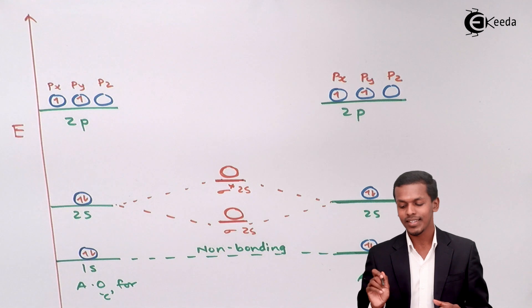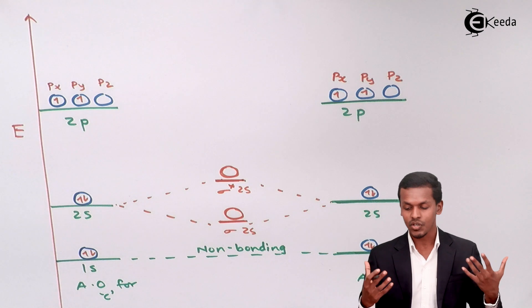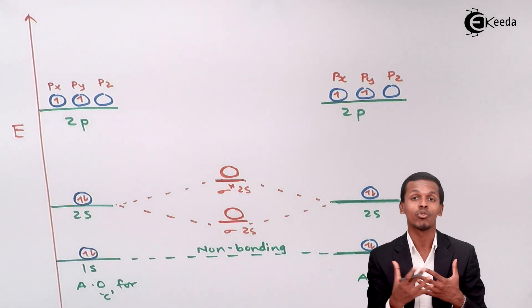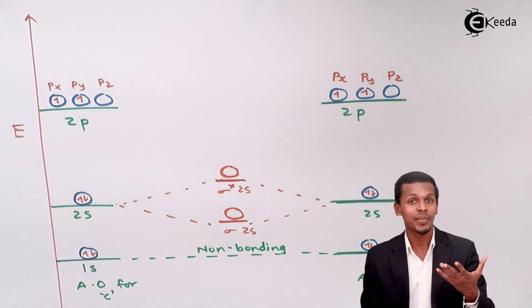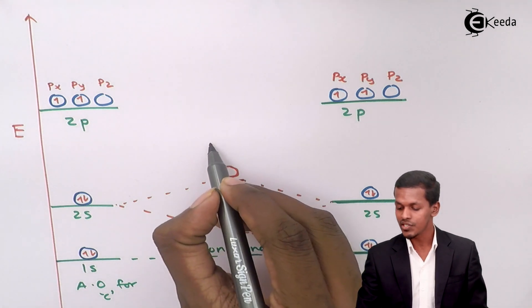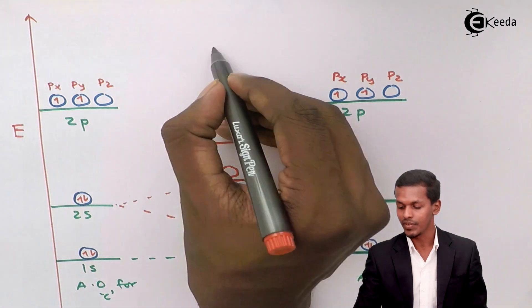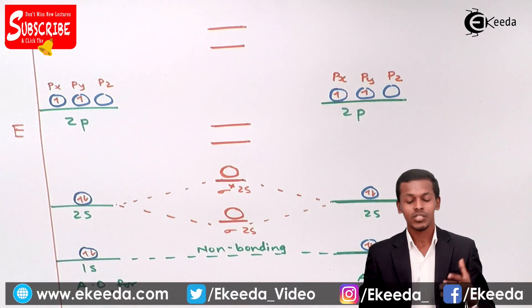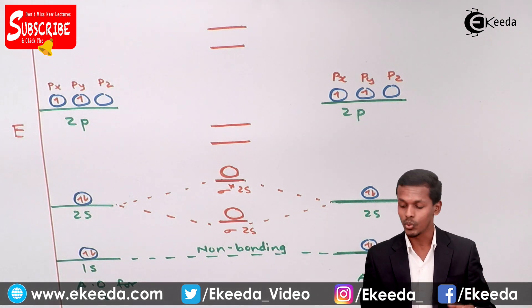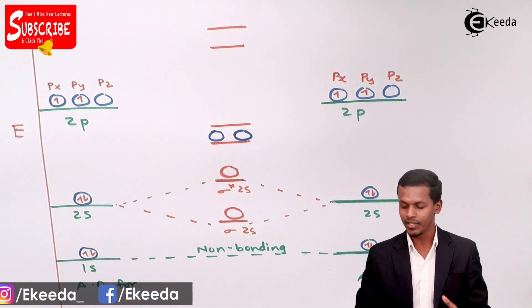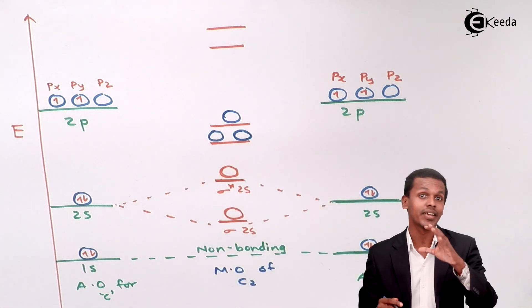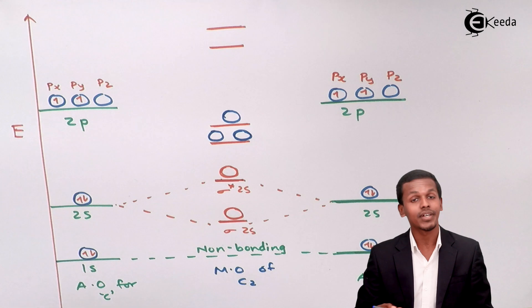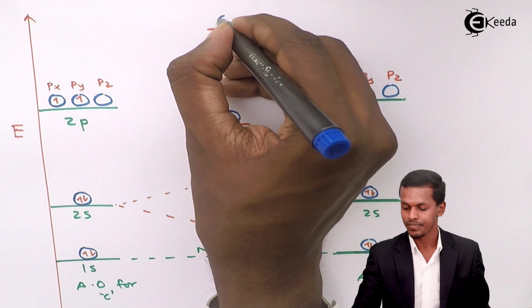Talking about the 2p orbital: the 2p subshell consists of 3 orbitals in each atom, making a total of 6 orbitals. When they combine, they form molecular orbitals at different energy levels. For the carbon molecule C2, the 2px and 2py orbitals are at a lower energy level in the bonding region, while the 2pz is at a higher energy level at the top of the bonding orbitals. For the anti-bonding orbitals, it follows the regular ordering.